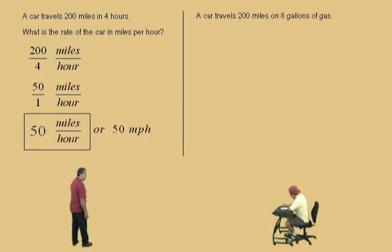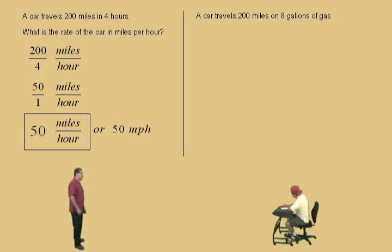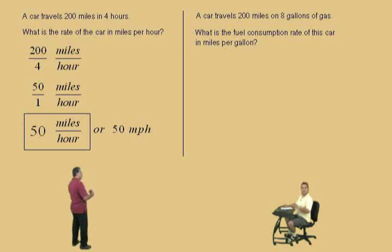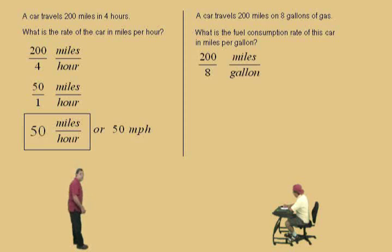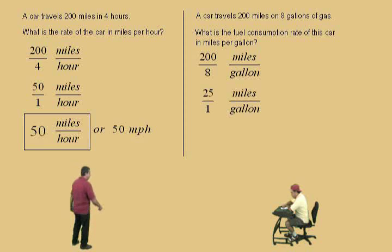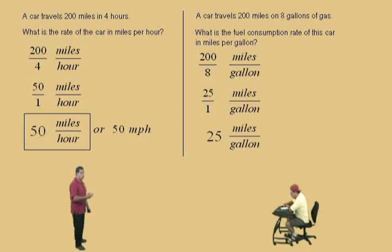A car travels 200 miles on 8 gallons of gas. This is a rate, but we're looking for miles per gallon here. What is the fuel consumption rate of this car in miles per gallon? Miles per gallon means we put miles over gallon. So 200 miles over 8 gallons — that's how we start. Now we reduce: divide top and bottom by 8. 200 divided by 8 — you can use your calculator — that's 25. And 8 divided by 8 is 1.